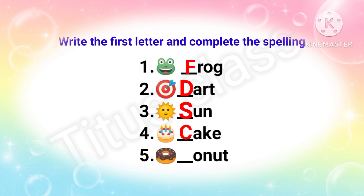Fourth one: cake — C-A-K-E, cake. Starting letter C. Fifth one: it is donut. Donut starts with letter D. So it is very easy.